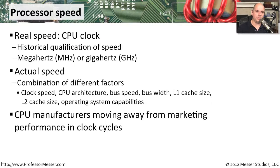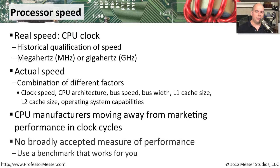Most CPU manufacturers recognize this. They're trying to move their marketing away from specifying how fast a CPU is and instead talking about the overall capabilities of the processor itself. This makes it a little more difficult for us to determine the actual performance of a processor, so you may want to find a test that works for you. There are a number of benchmarking utilities out on the internet, or maybe it's running a particular spreadsheet or program that helps you understand the exact performance you're going to get.